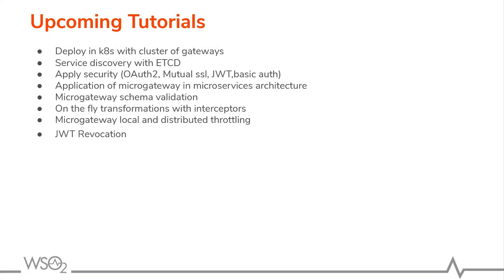These are the upcoming tutorials: deploying Microgateway in Kubernetes; using an ETCD server for service discovery; applying security using OpenAPI definitions with OAuth2, JWT, and basic auth; enabling mutual SSL for Microgateway; demonstrating Microgateway in a microservices architecture; schema validation using the OpenAPI definition; on-the-fly transformation with interceptors; and Microgateway local and distributed throttling as well as JWT revocation.